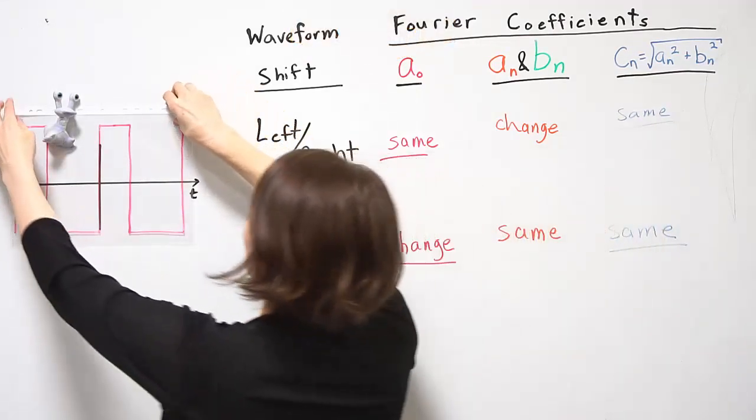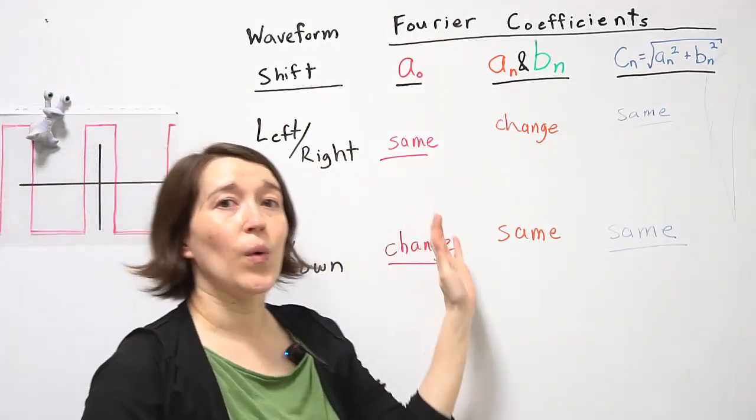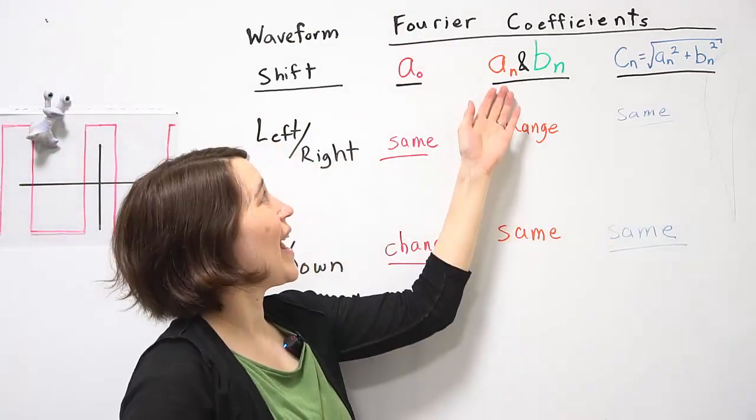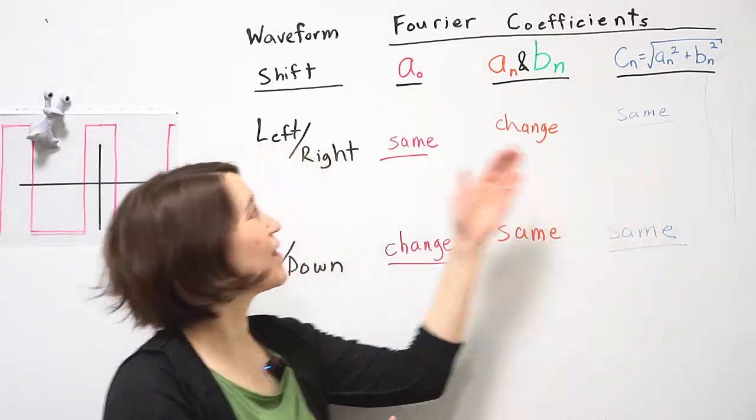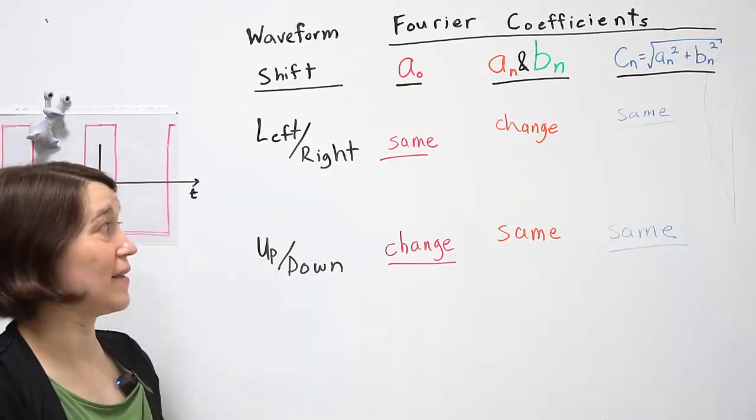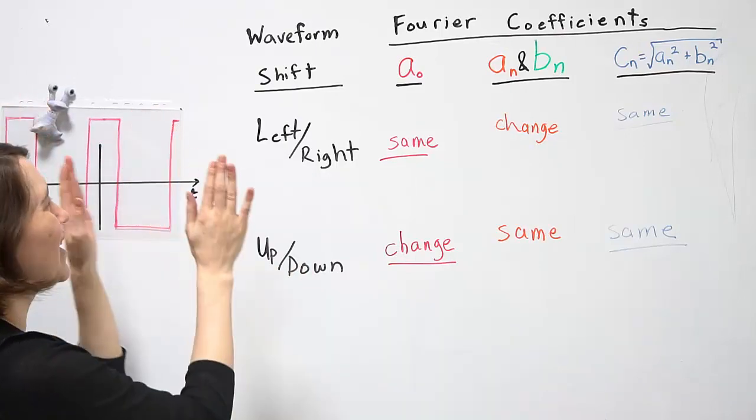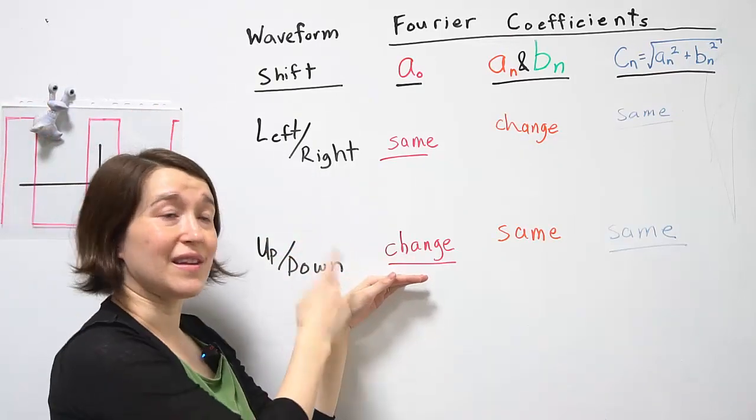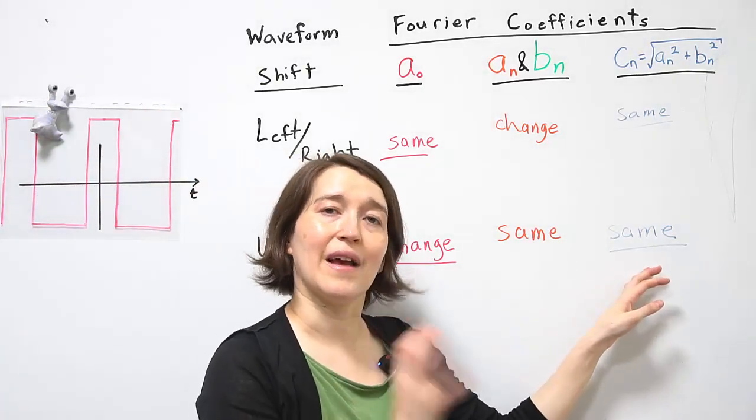So if we're shifting left and right, the only effect is on aN and bN. But if we're looking at cN, it has no effect, so we can shift that easily and it won't affect our calculations for harmonics. However, if we shift up and down, we have to account for the DC change, but the value of cN will be identical.